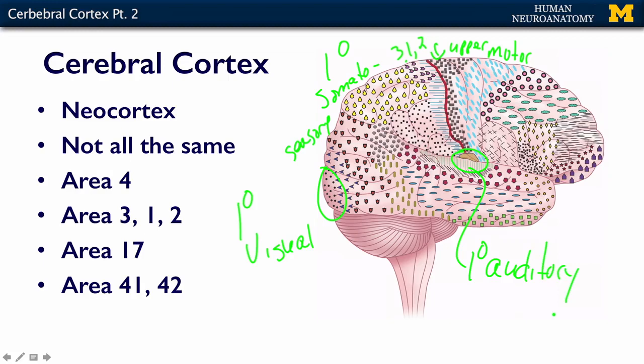When Brodmann first described all of these different areas, he didn't know quite what it meant. It waited until we had neurophysiology, basically — a couple of decades later, before people could actually record what neurons were doing. Then they started to correlate and realize that the cellular structure of the brain reflects what it does, and it's different based on the job it has. That was quite a major breakthrough and still holds true today.